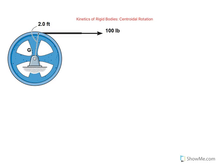A very simple problem where this flywheel is rotating about its center of gravity, point G, under the action of a constant force. So this 100-pound force is a constant force.